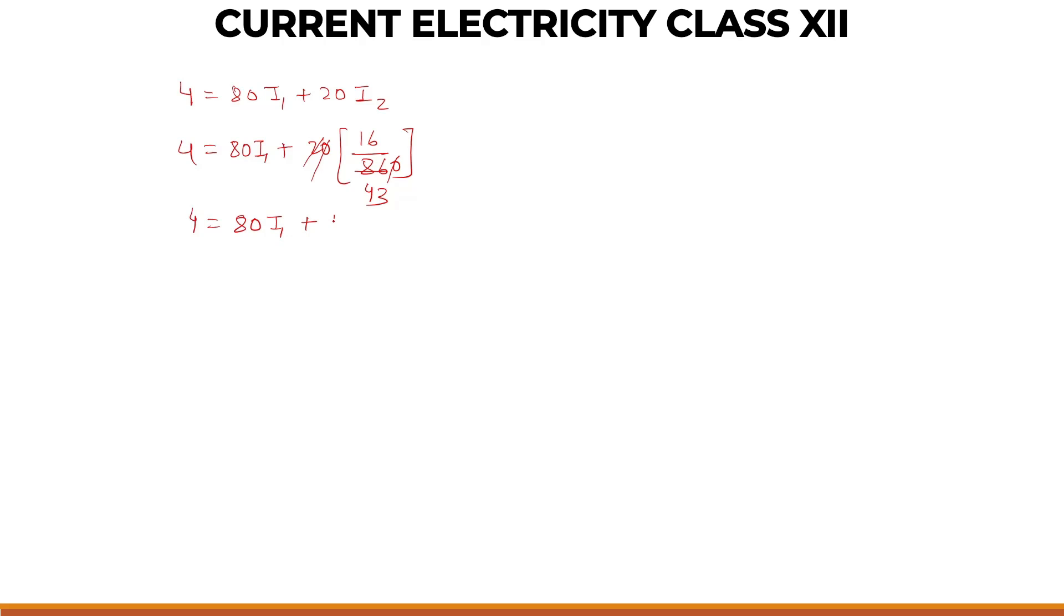Let's take the 16 by 43 on the left hand side. 4 minus 16 over 43, that equals 80 I1. Let's simplify further. 4 times 43 is 172 minus 16 upon 43 equals 80 I1.